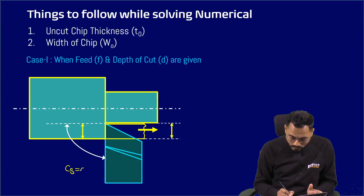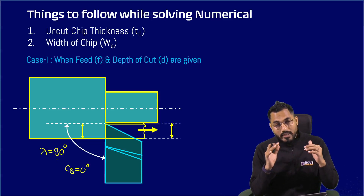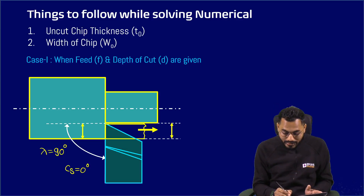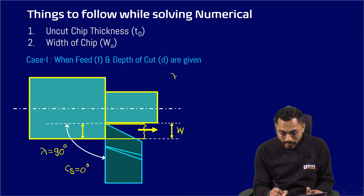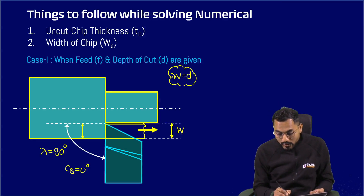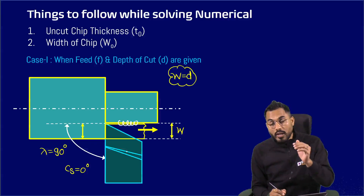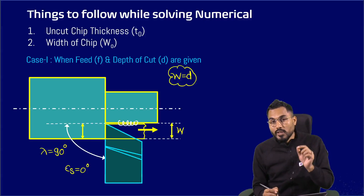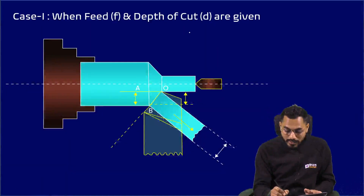During a metal cutting operation, if the side cutting edge angle C_s is exactly equal to zero — or equivalently, lambda (the approach angle, also called the principal cutting edge angle) is exactly 90 degrees — the depth of cut equals the width of cut, which is at its least value and is most preferred. However, at that condition, the chip starts interacting with the machined surface and spoils it. Therefore, C_s cannot be zero; a certain positive value of C_s must be given.